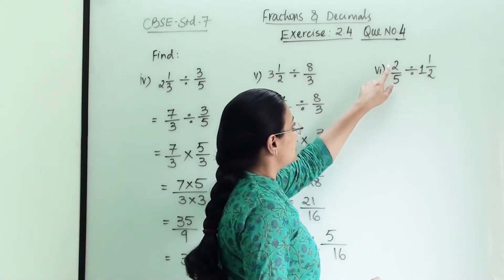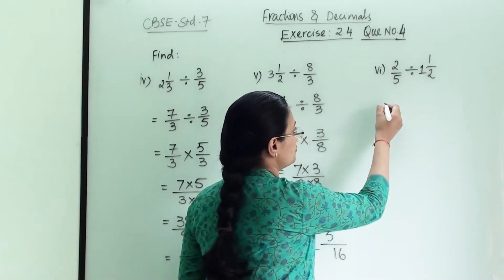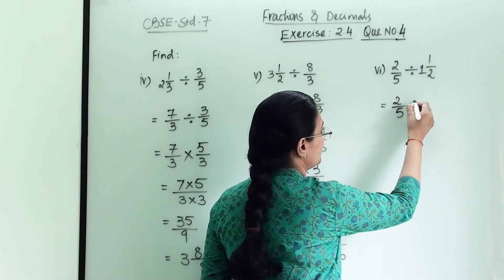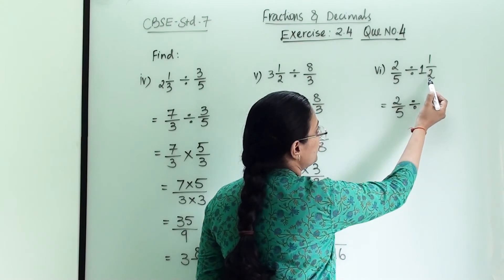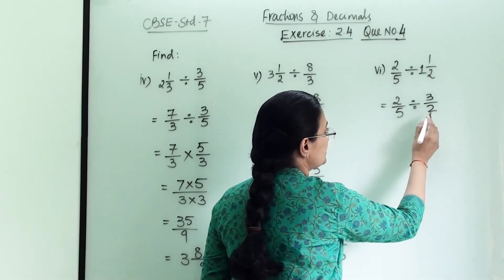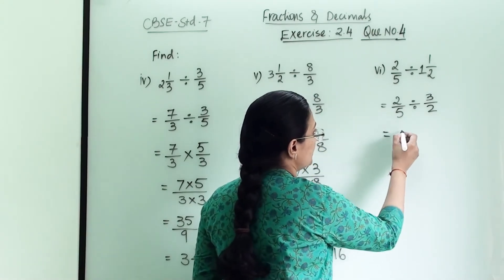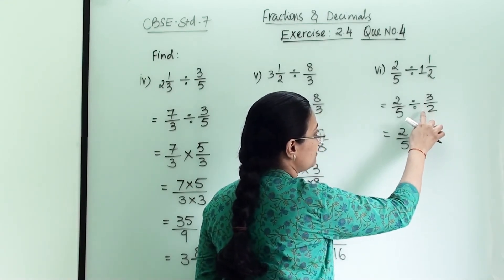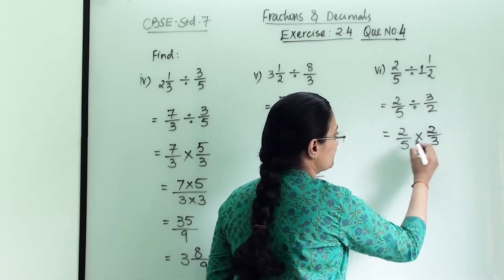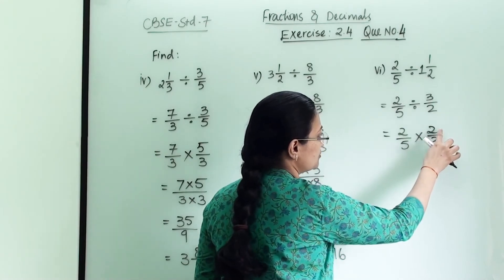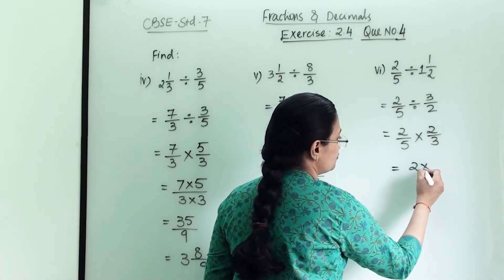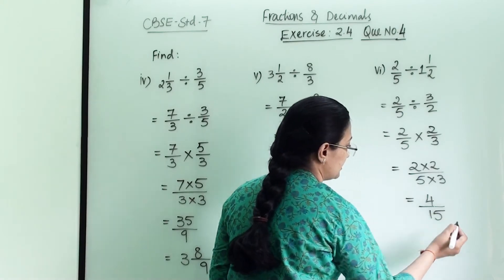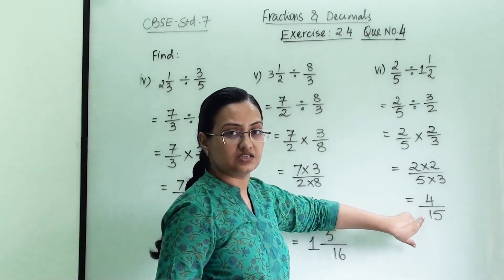The sixth numerical is 2 by 5 in division with 1 and 1 by 2. First we convert the mixed fraction into an improper fraction: 2 into 1 is 2 plus 1 is 3, so we get 3 by 2. Now we have 2 by 5 divided by 3 by 2. We convert division to multiplication and take the reciprocal of 3 by 2, which is 2 by 3. So 2 into 2 divided by 5 into 3 gives us 4 by 15, which is a proper fraction.